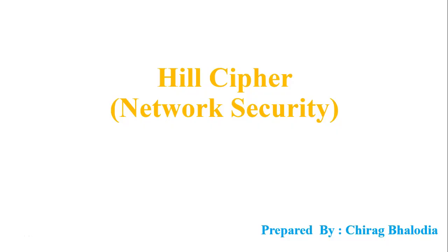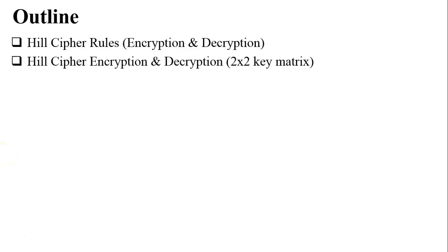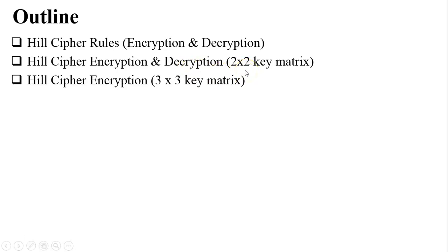Hello friends, myself Chirag. In this video I am going to discuss about Hill Cipher, a topic of network security. The outline of this video is: Hill Cipher rules for encryption and decryption, an example of Hill Cipher encryption and decryption using a 2×2 key matrix, an example of Hill Cipher encryption using a 3×3 key matrix, and finally an exercise of Hill Cipher.